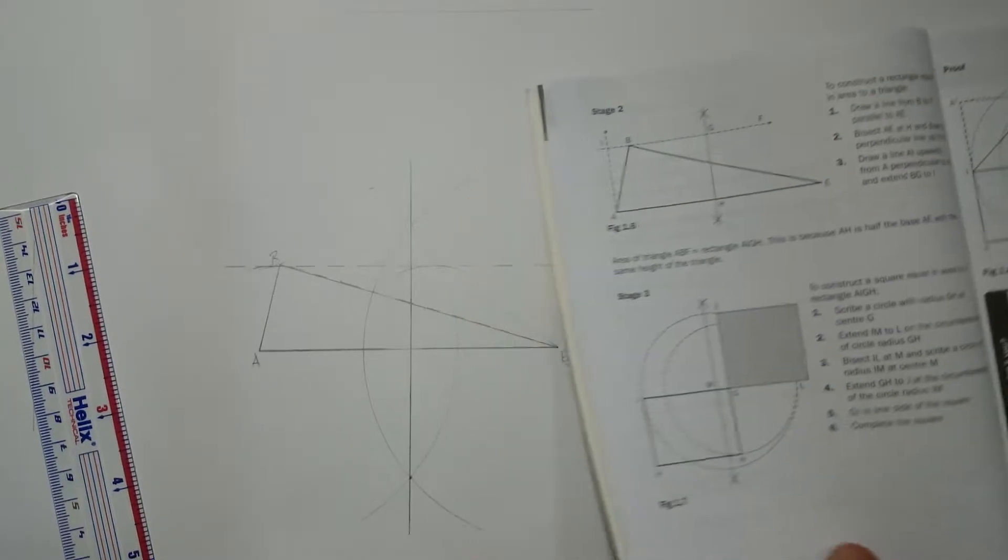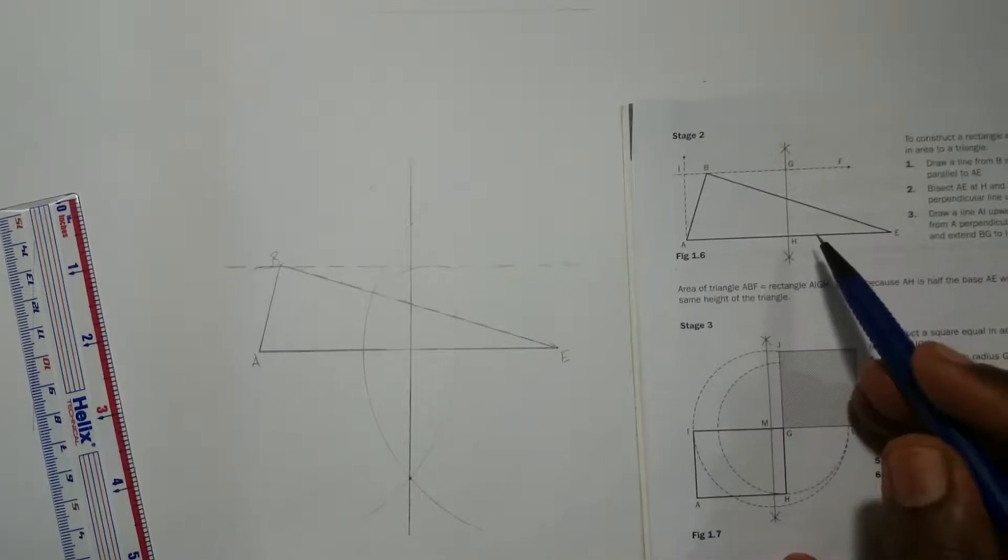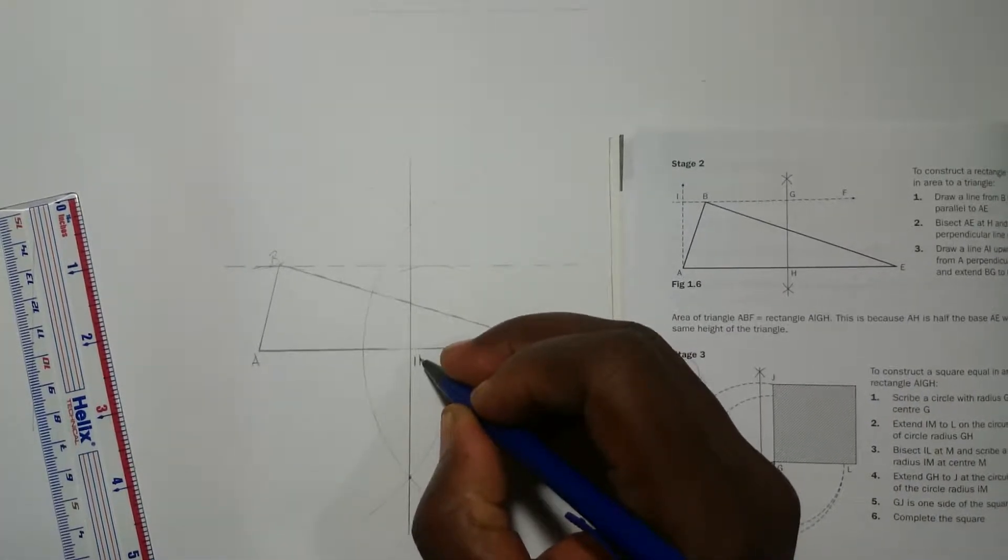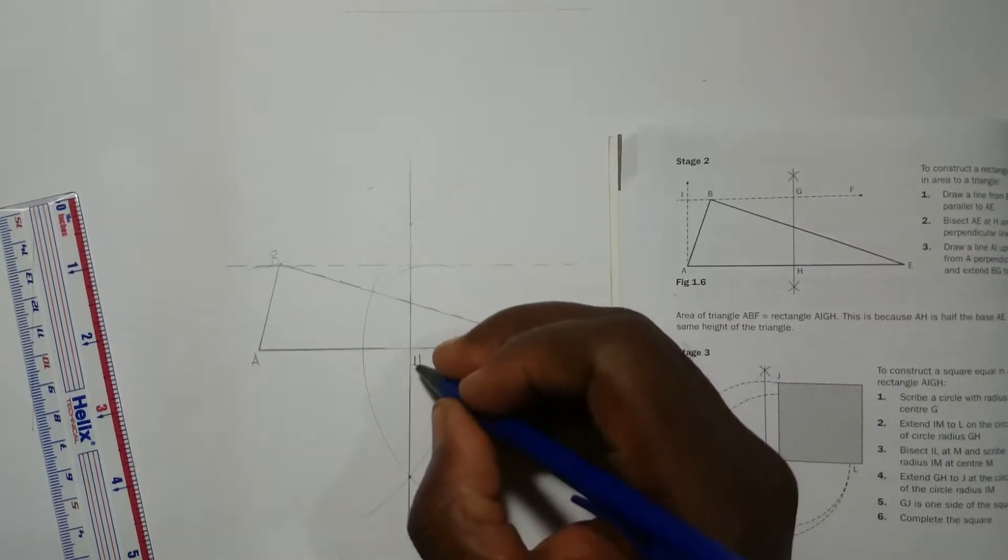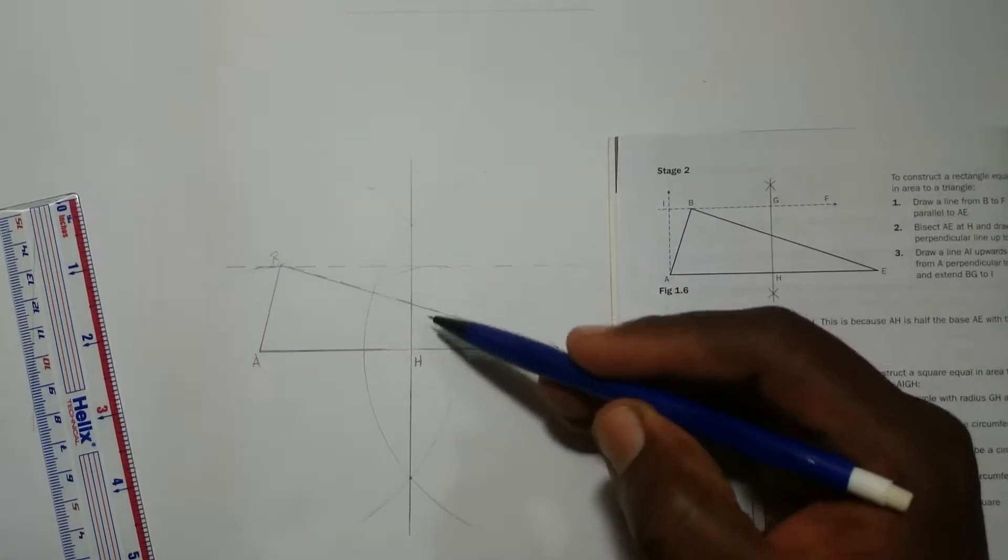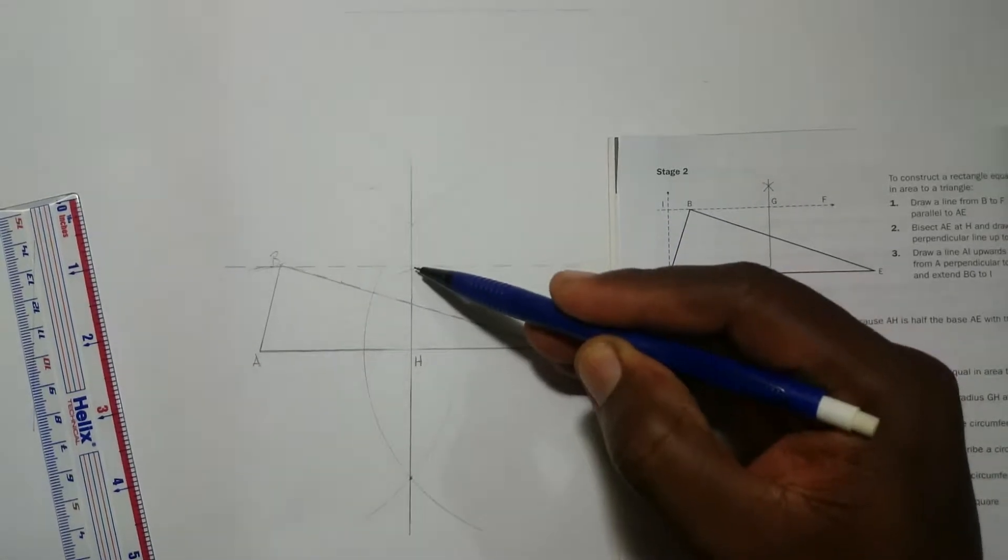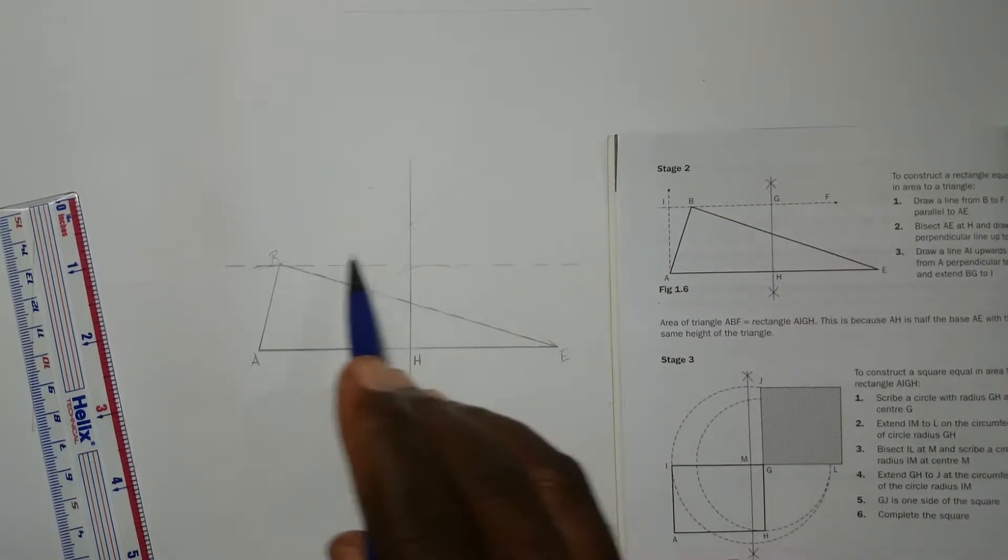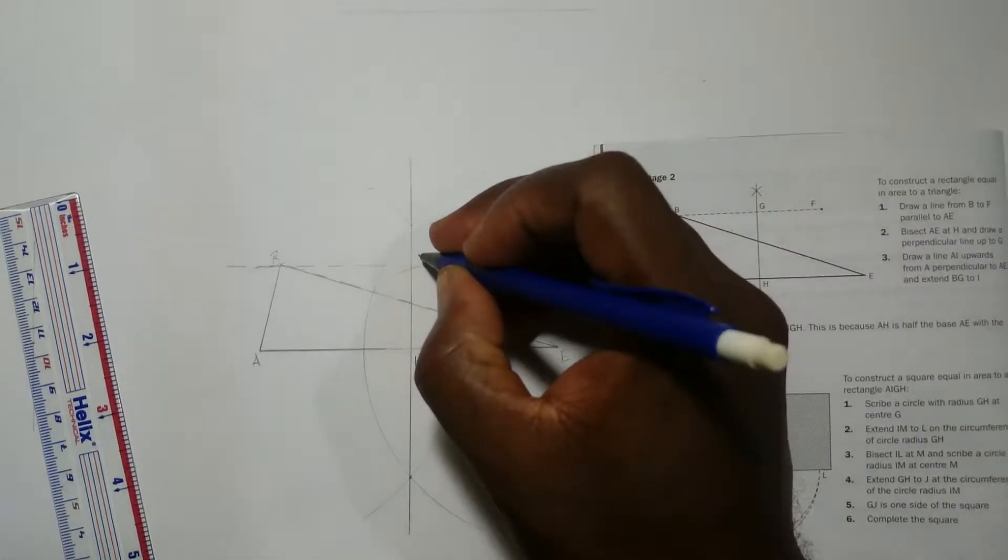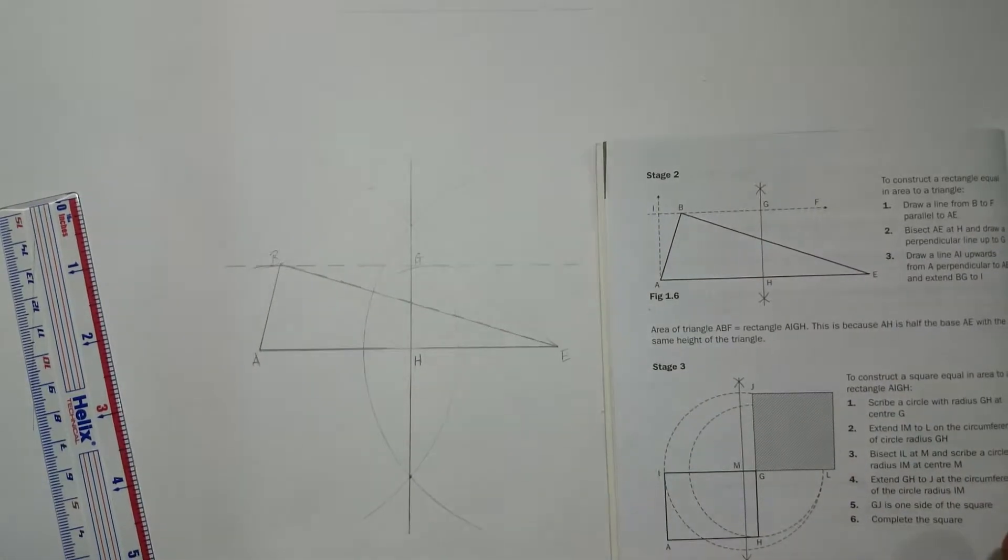It's gonna create H right here, so we're gonna label it H. Always label your drawings so that you don't get confused. The point where the bisection line intersects the hidden line, that's gonna create G. You have G right there.